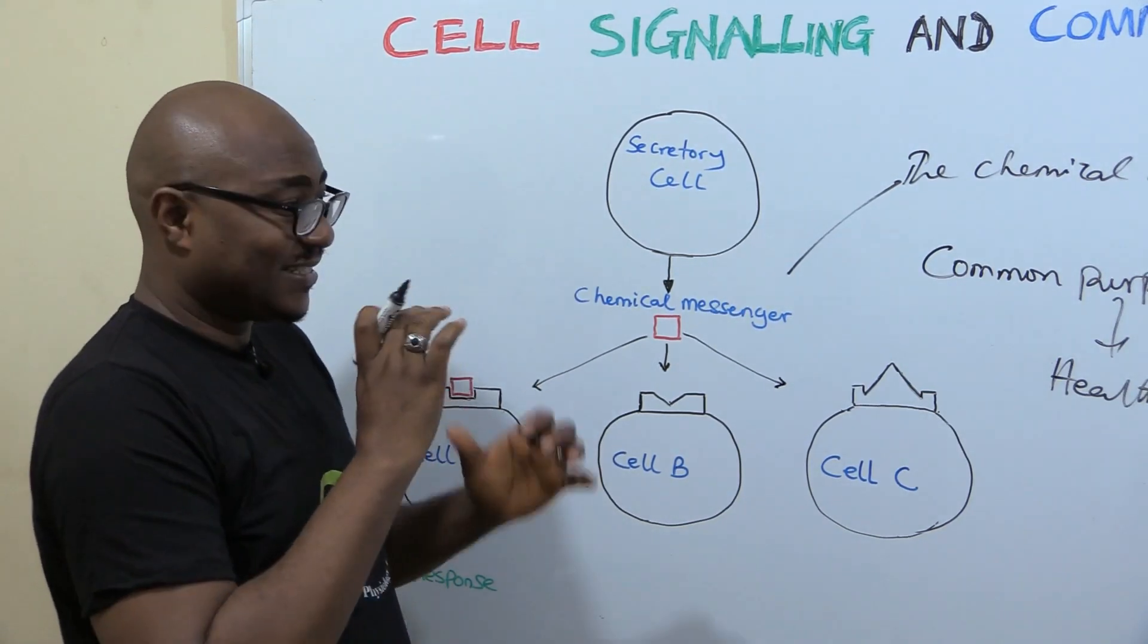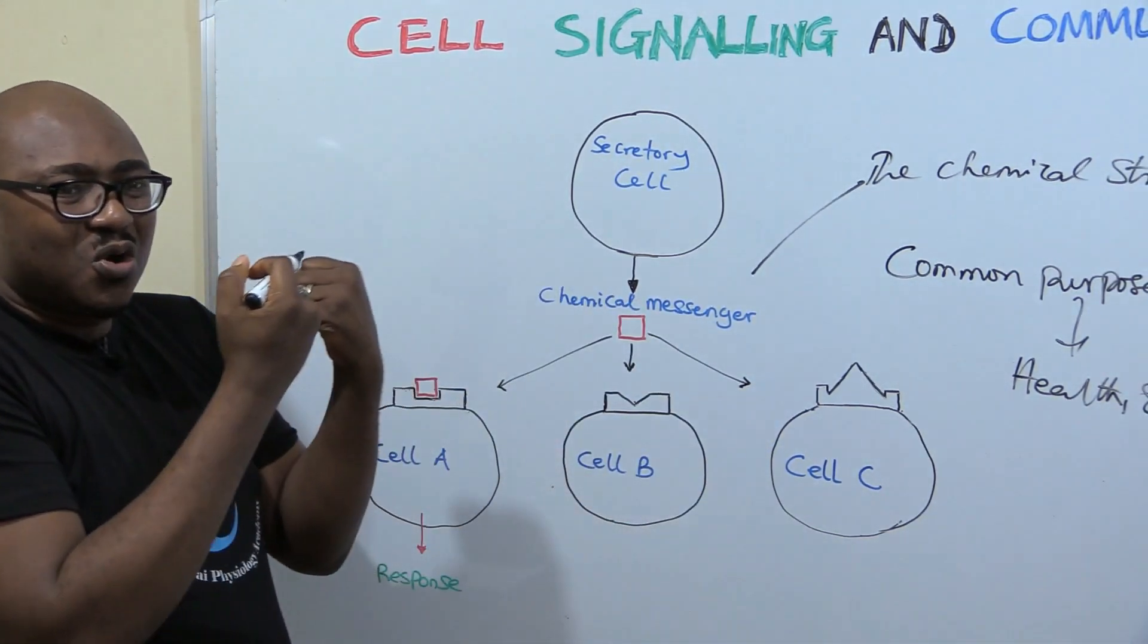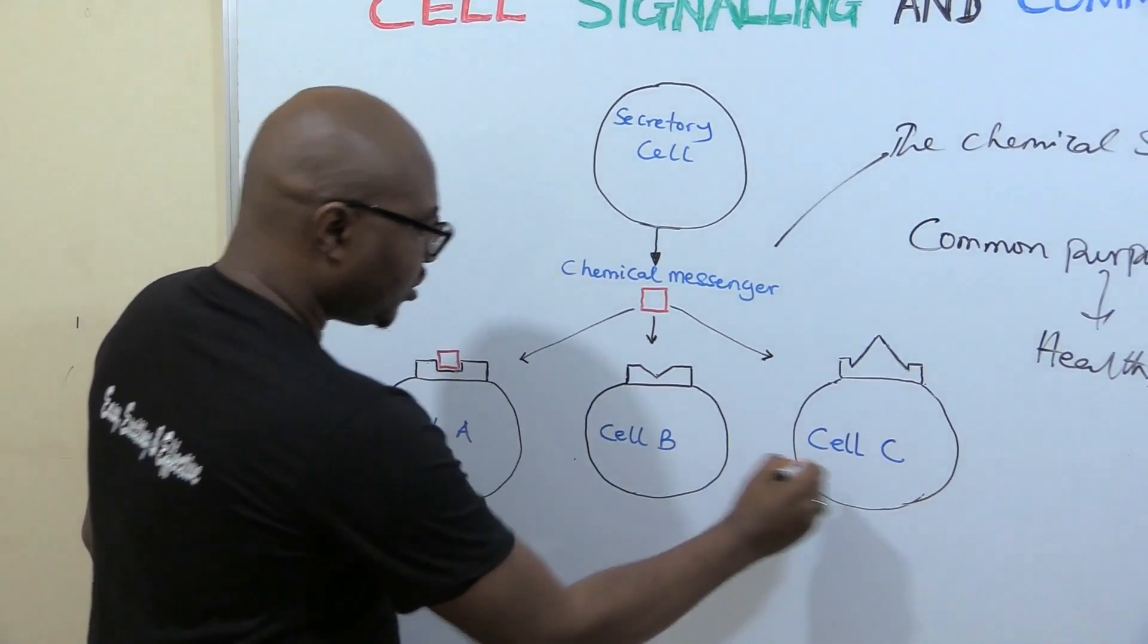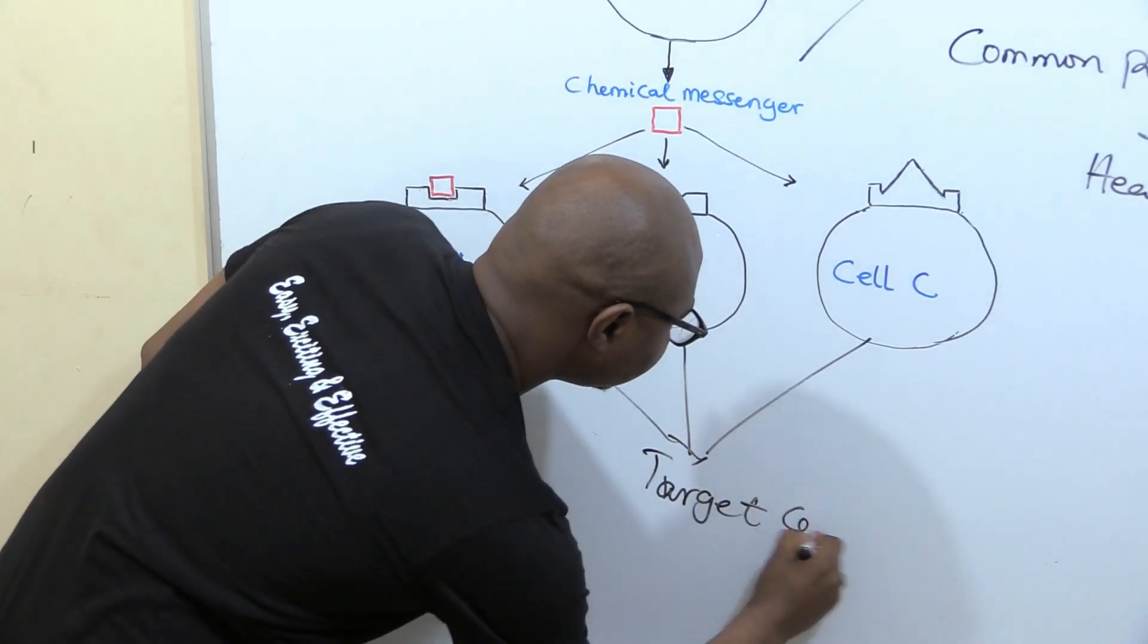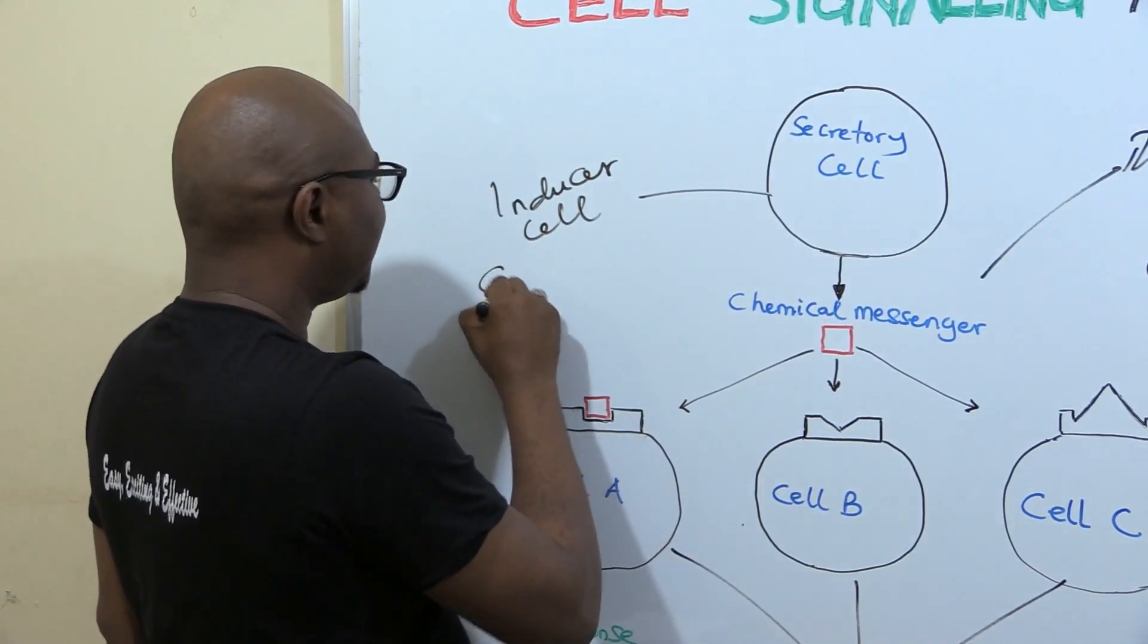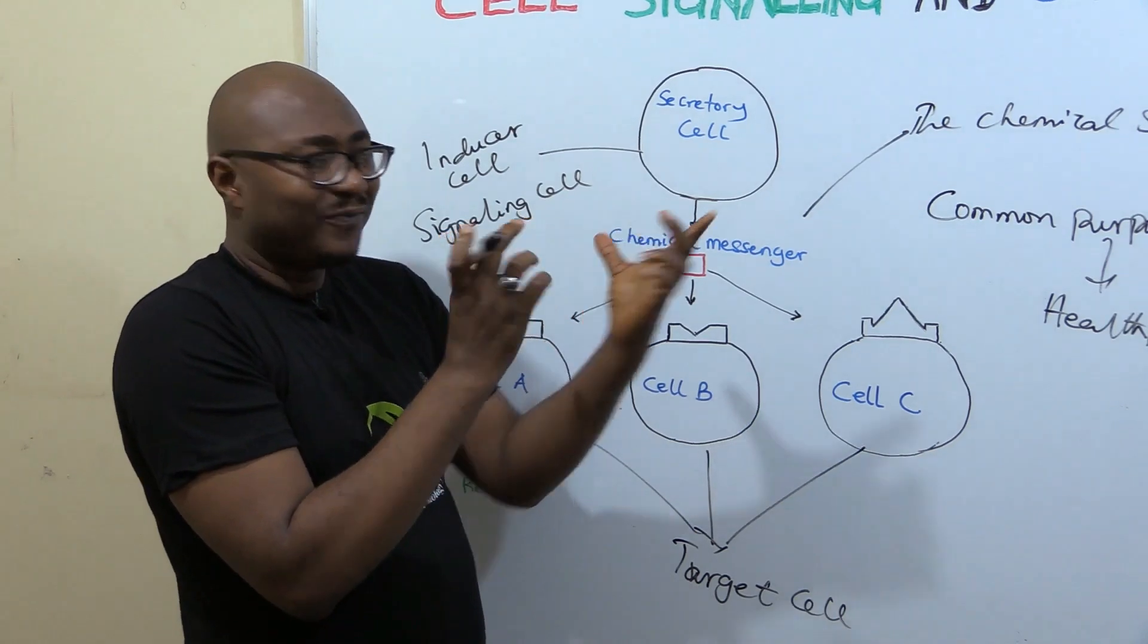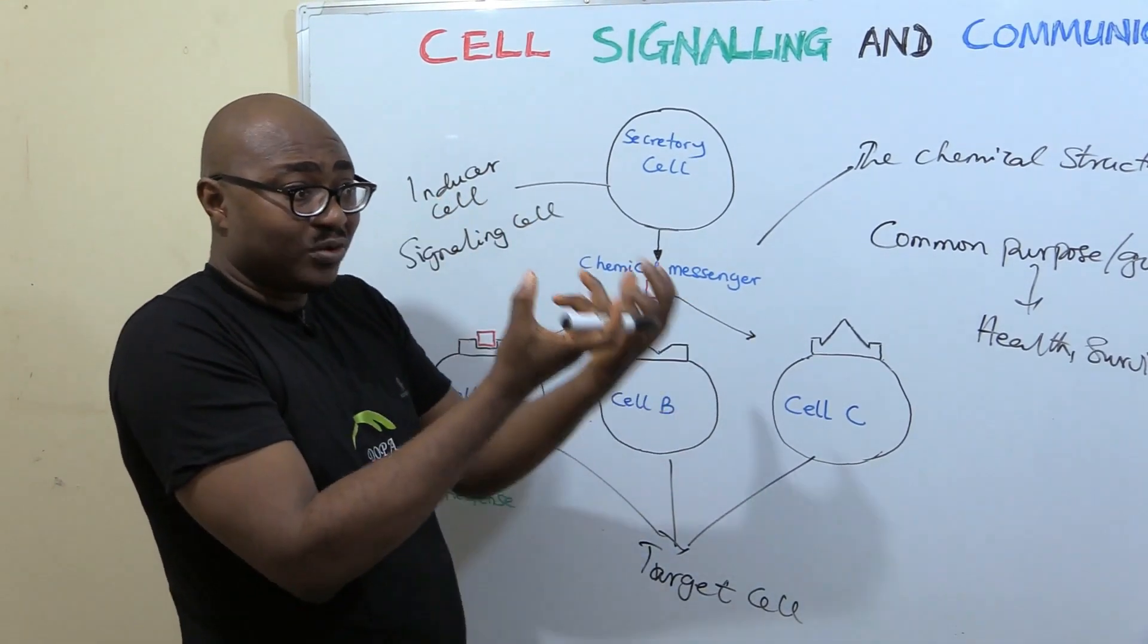The chemical structure is the language. That's what it uses to send a specific information. And there needs to be another part of the cell that will receive the information. The cell that receives the information is called the target cell. One, two, three. These three, they are what? Called the target cell. So this one is called the inducer cell. Inducer cell. Also called signaling cell. So for the cell to receive the information, it needs to be able to fit into the structure. So only the cell that fits into the structure that will understand and lead to a response.